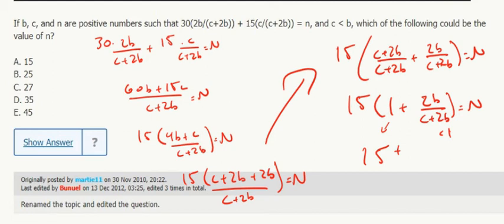But c is less than b, so c plus 2b can't be 3b, because b plus 3b is 3b, but it's c plus 2b. Sorry, b plus 2b is 3b, but it's c plus 2b, and c is less than b, so c plus 2b has to be less than 3b.